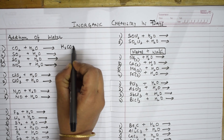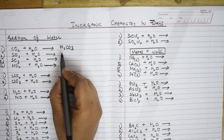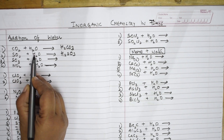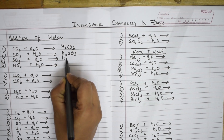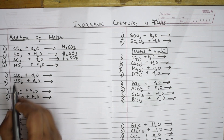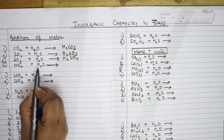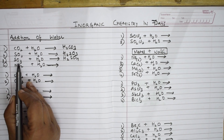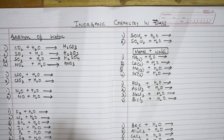When sulfur dioxide combines with water we get H2SO3, sulfurous acid. When sulfur trioxide combines with water, there is one extra oxygen, so we get H2SO4 — simple addition. When NO2 combines with water: just like carbon dioxide forms carbonic acid, sulfur dioxide forms sulfurous acid, and sulfur trioxide forms sulfuric acid, nitrogen dioxide forms nitric acid, HNO3.